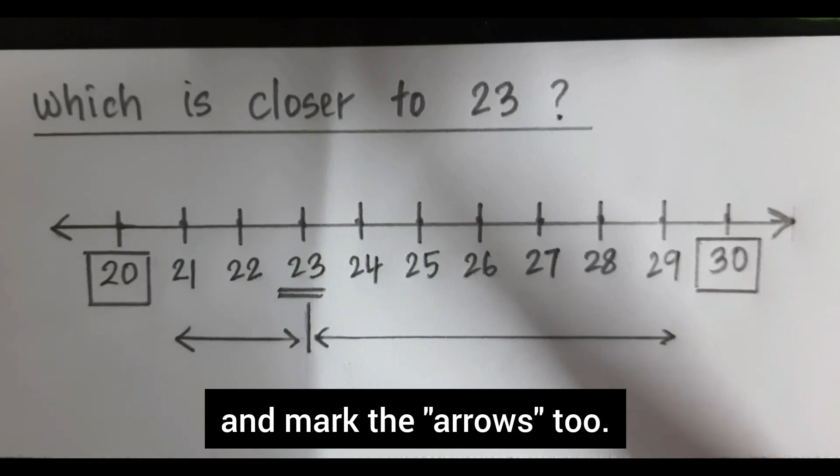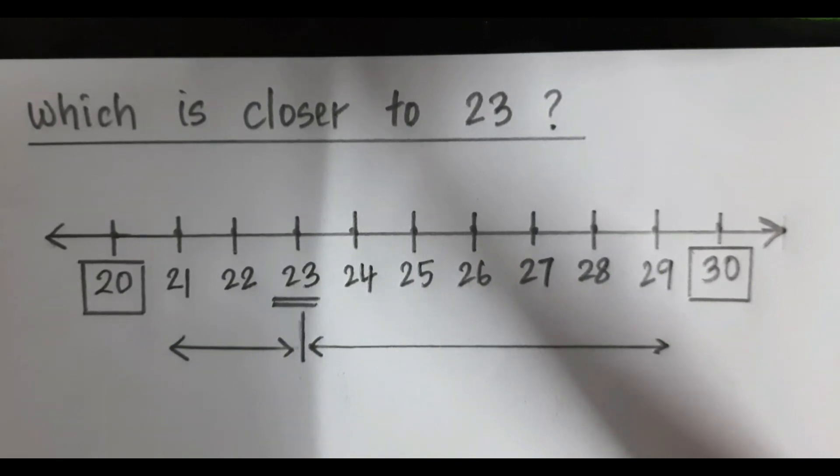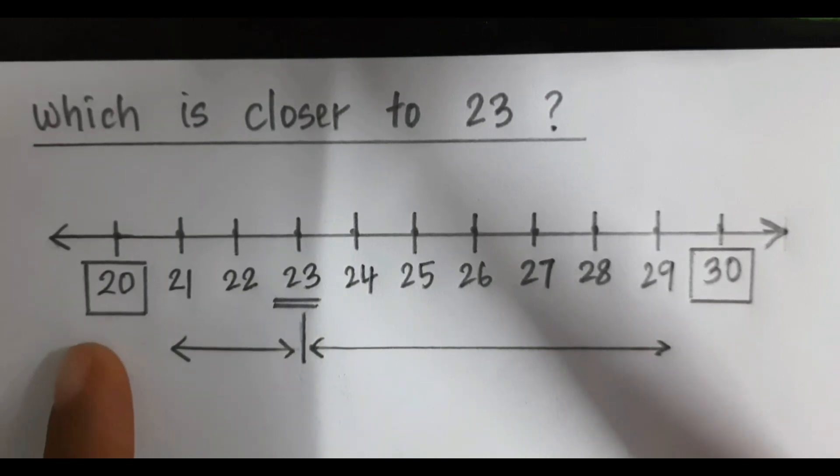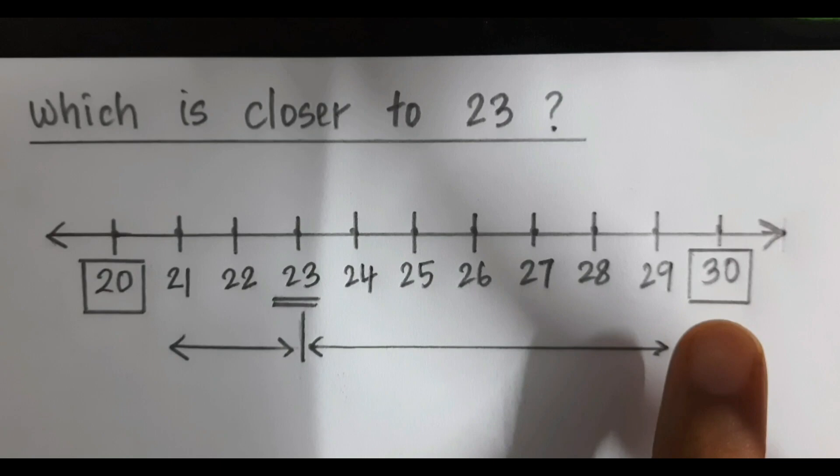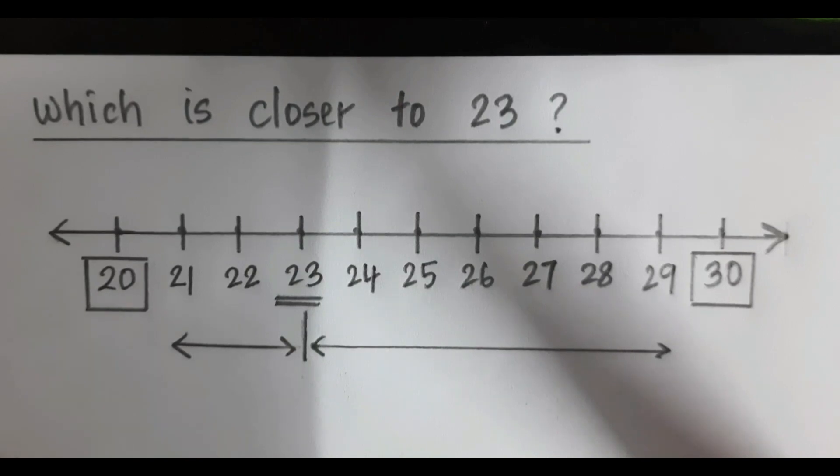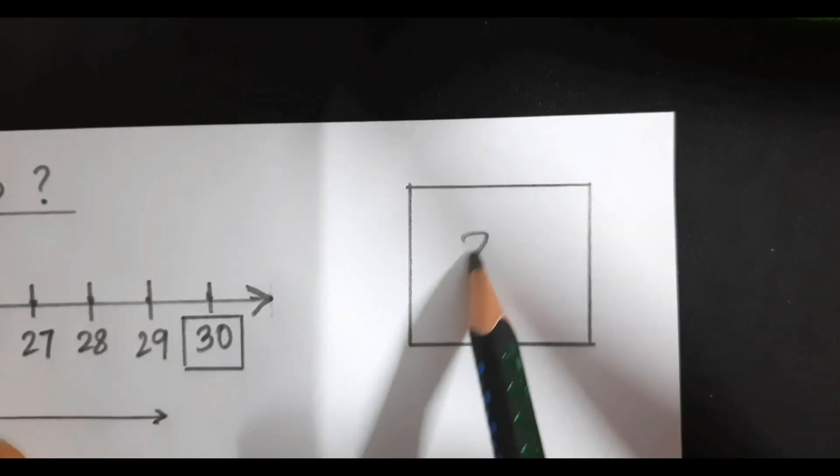Now, ask the child, pointing to these arrows, which is closer to 23? 20 or 30? The child will look at the arrows and will say 20. So, 20 is the answer.